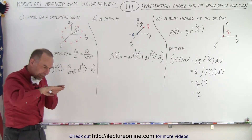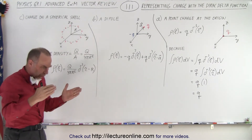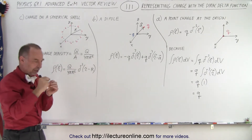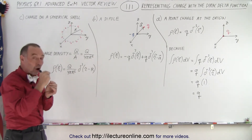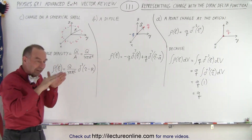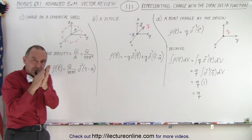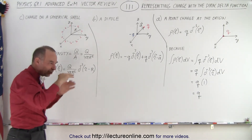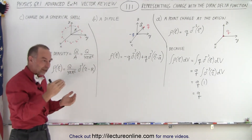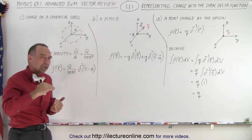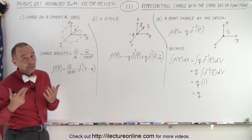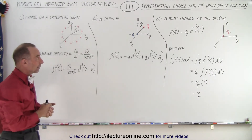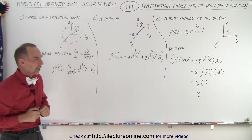When we place a charge on a shell, there's only charge at that very location — a distance r away from the origin — and it's an infinitesimally thin distance. In other words, there's charge at an exact location on the shell, not beyond it and not inside of it. Because of that, we need to use the Dirac delta function in order to represent it correctly. So let's see what that looks like.